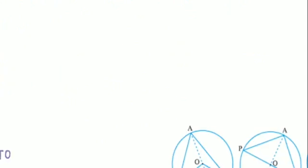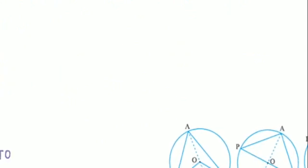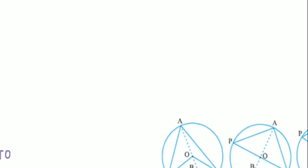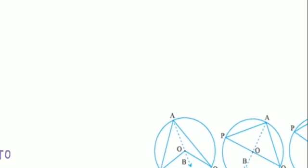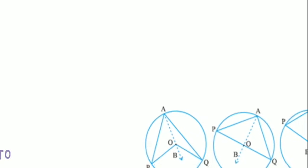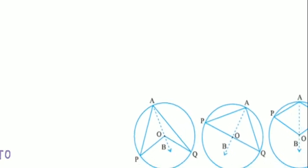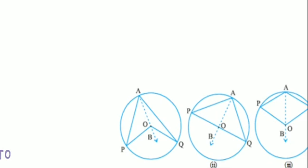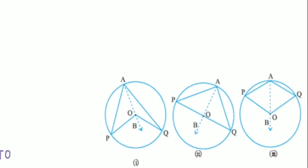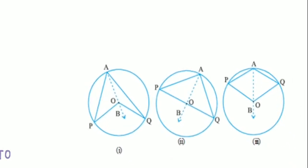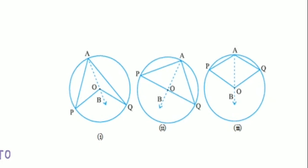Now see this figure carefully. I will make you understand everything about this figure and this theorem. In all three figures, angle POB is equal to angle OPA plus angle OAP, because of the exterior angle property.